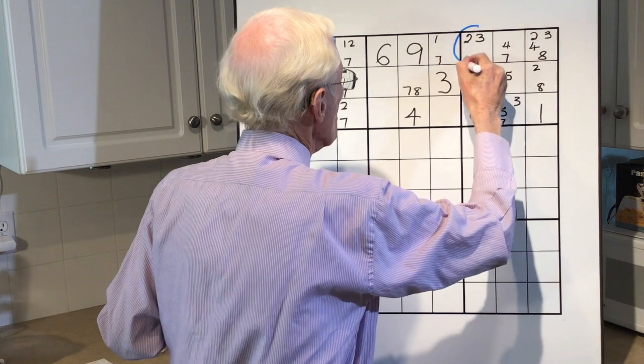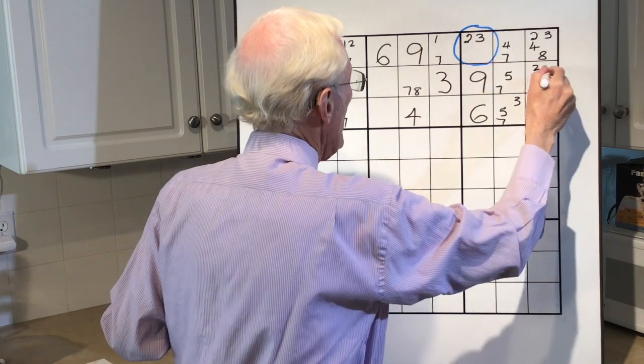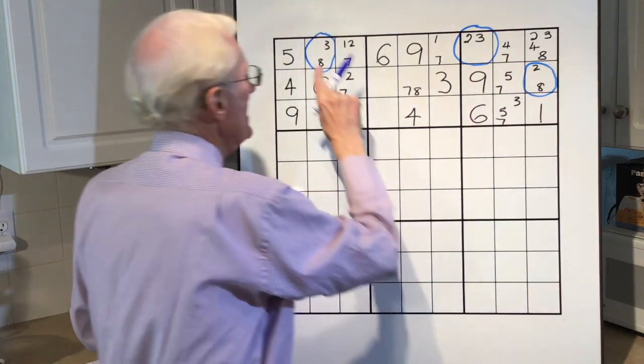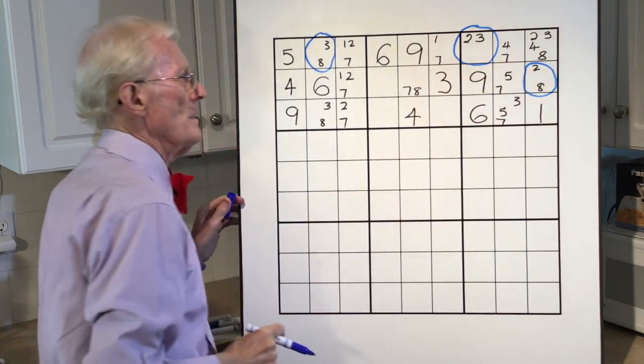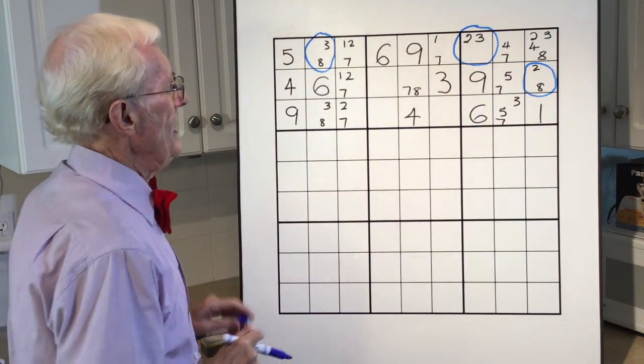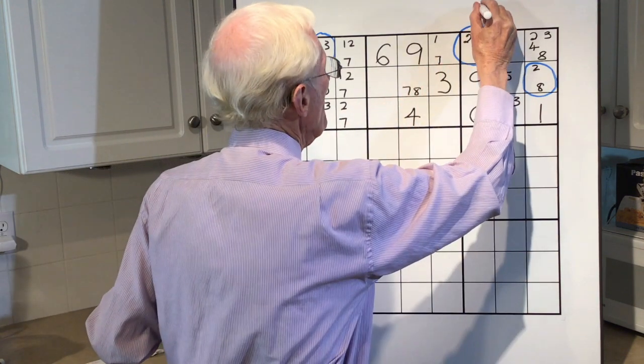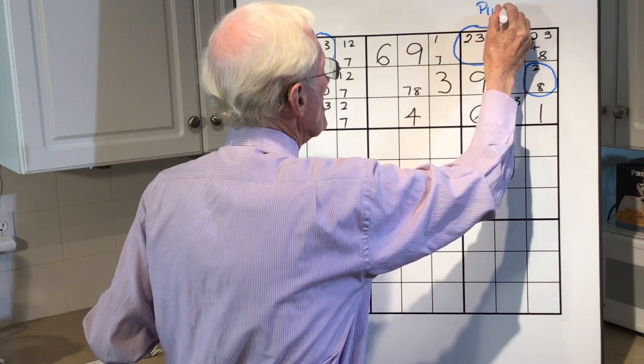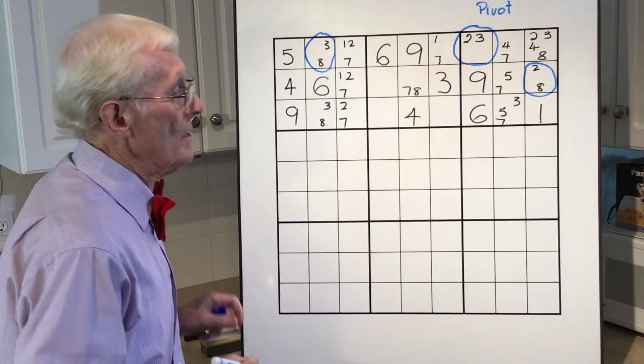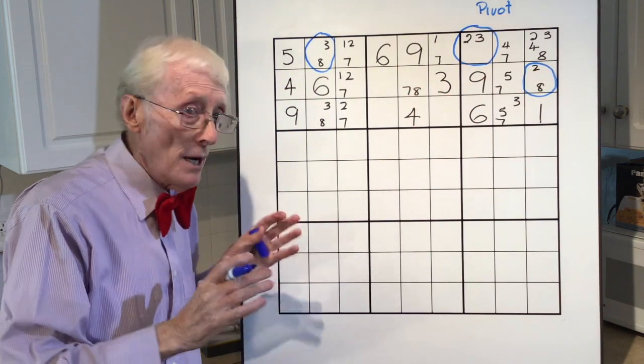And I'm going to circle the cells so you can see what I'm talking about. This is a 2, 3, 8. Here's your triplet, or your 3 by 3. And this becomes the pivot, because by using this as a pivot, we can get rid. We can remove a number.